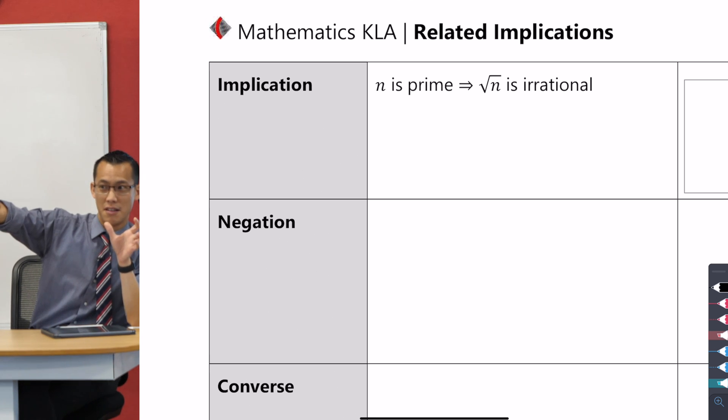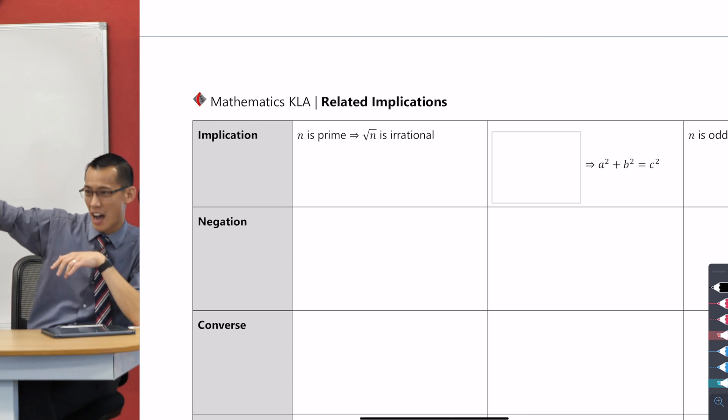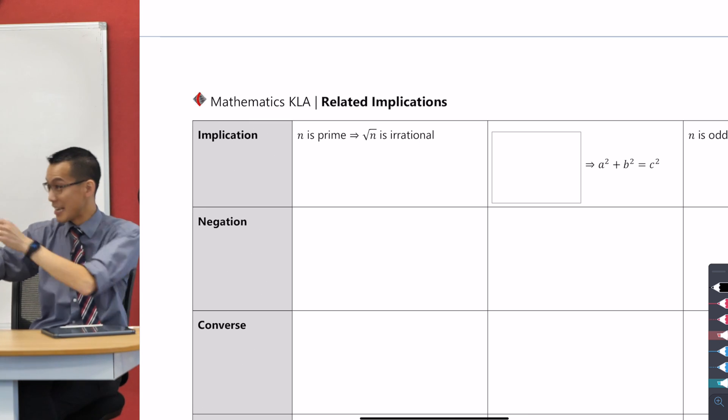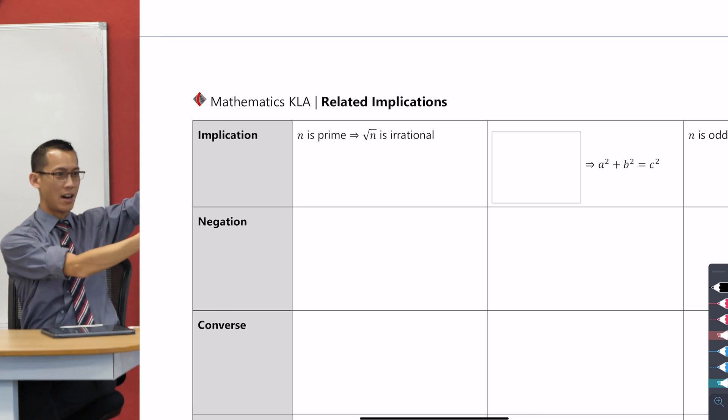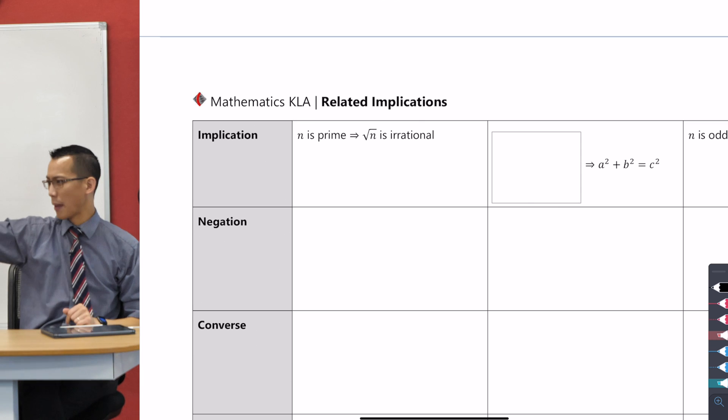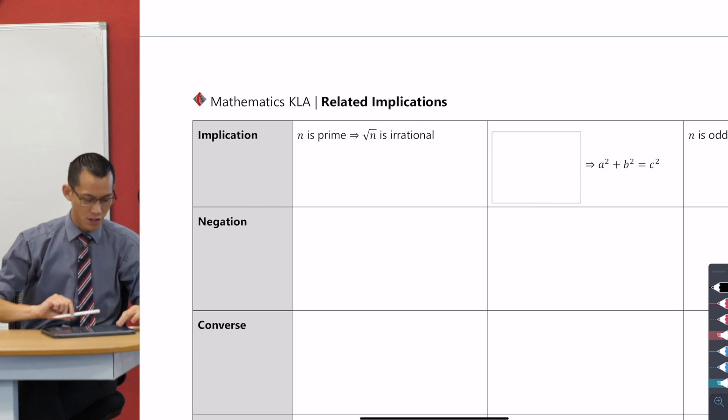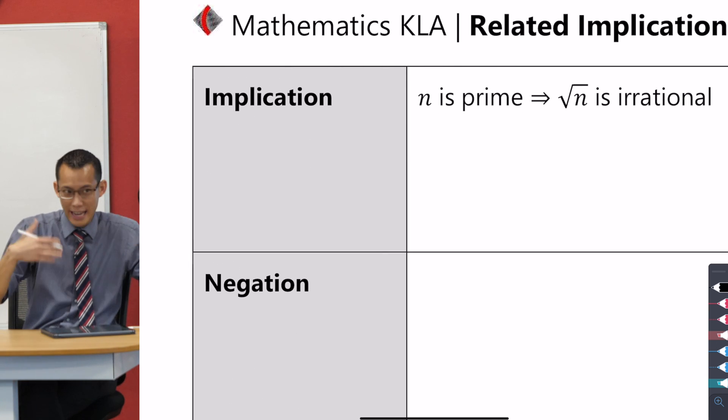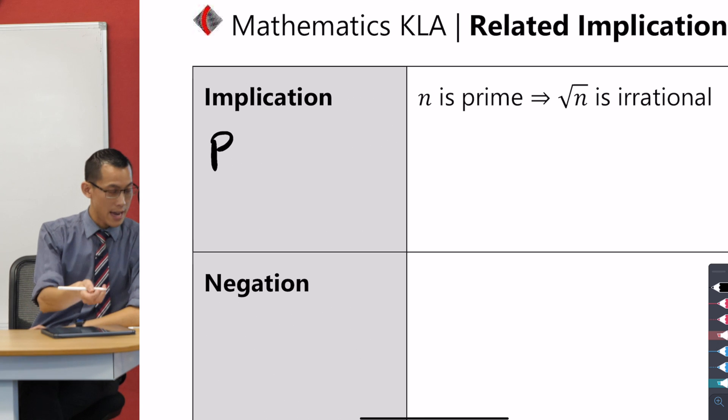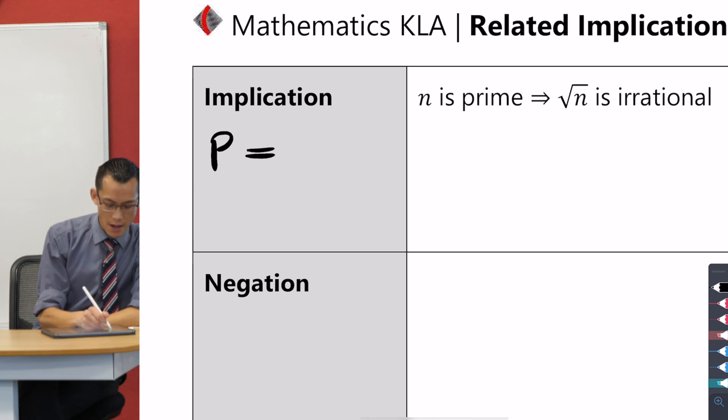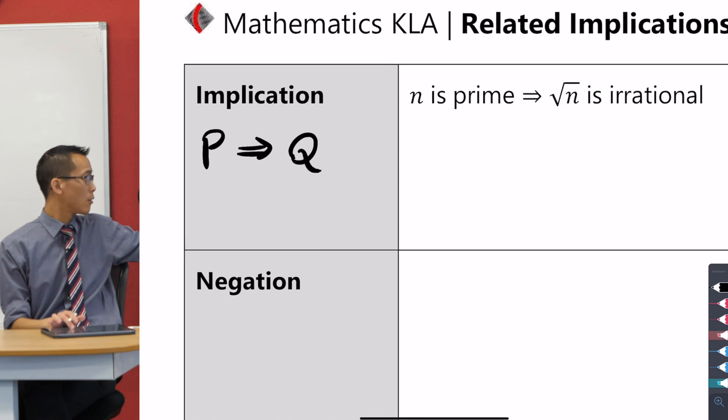All implications have kind of two halves to them. There's some kind of condition that you start with, and you say if this is true, then this must also be true. So P implies Q is our general way of saying that. We have notation that goes with this which we might as well put just to gain our familiarity here. An implication is always going to be the form P, some statement, implies Q. If P then Q, and you can see a bunch of them over here.